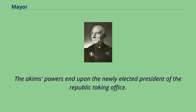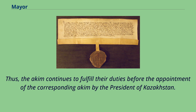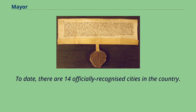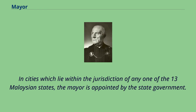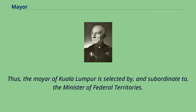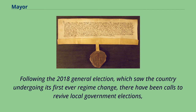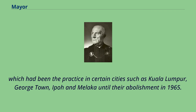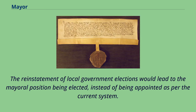The Akim's powers end upon the newly elected president of the republic taking office, and the Akim continues to fulfill their duties before the appointment of a corresponding Akim by the president. The mayor functions as the head of the local government of cities in Malaysia. To date, there are 14 officially recognized cities in the country. In cities within the jurisdiction of any one of the 13 Malaysian states, the mayor is appointed by the state government. Kuala Lumpur, the country's capital, is a notable exception, as it forms part of the federal territories under the purview of the Malaysian federal government via the Ministry of Federal Territories. Thus the mayor of Kuala Lumpur is selected by, and subordinate to, the Minister of Federal Territories. Following the 2018 general election, which saw the country's first-ever regime change, there have been calls to revive local government elections, which had been practiced in cities such as Kuala Lumpur, Georgetown, Ipoh, and Malacca until their abolishment in 1965.